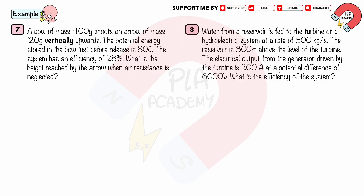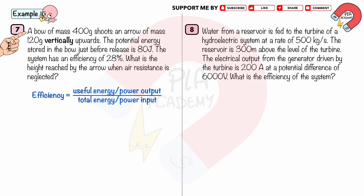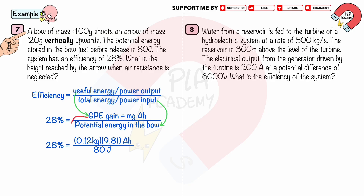Work example 7. A bow of mass 400 grams shoots an arrow of mass 120 grams vertically upwards. The potential energy stored in the bow just before release is 80 joules. The system has an efficiency of 28%. What is the height reached by the arrow when air resistance is neglected? Efficiency equals useful energy output divided by total energy input. The useful energy output equals GPE gain equals MG delta H, where M equals 0.12 kilograms. The total energy input equals the potential energy stored in the bow equals 80 joules. We solve delta H equals 19 meters to two significant figures.